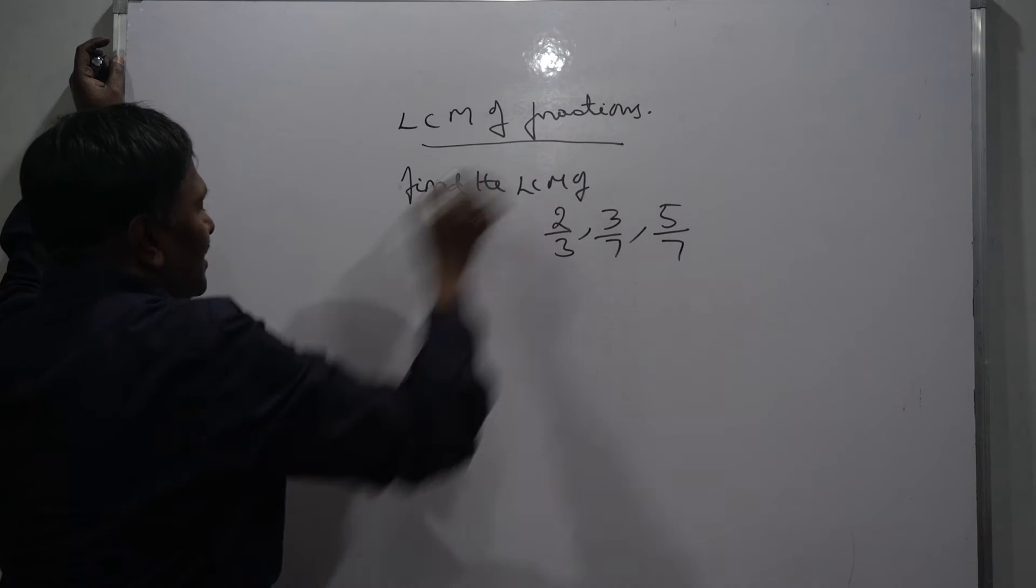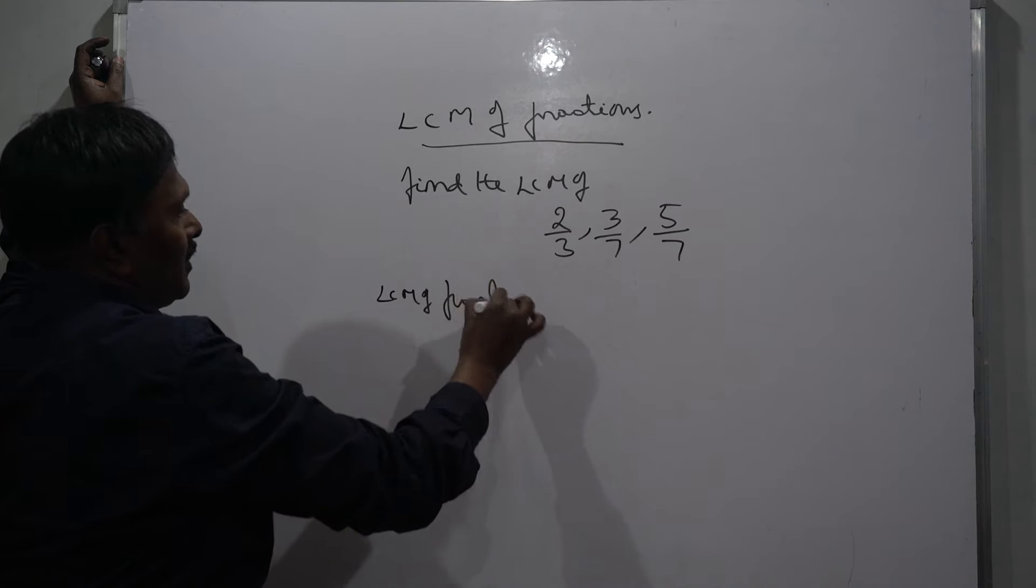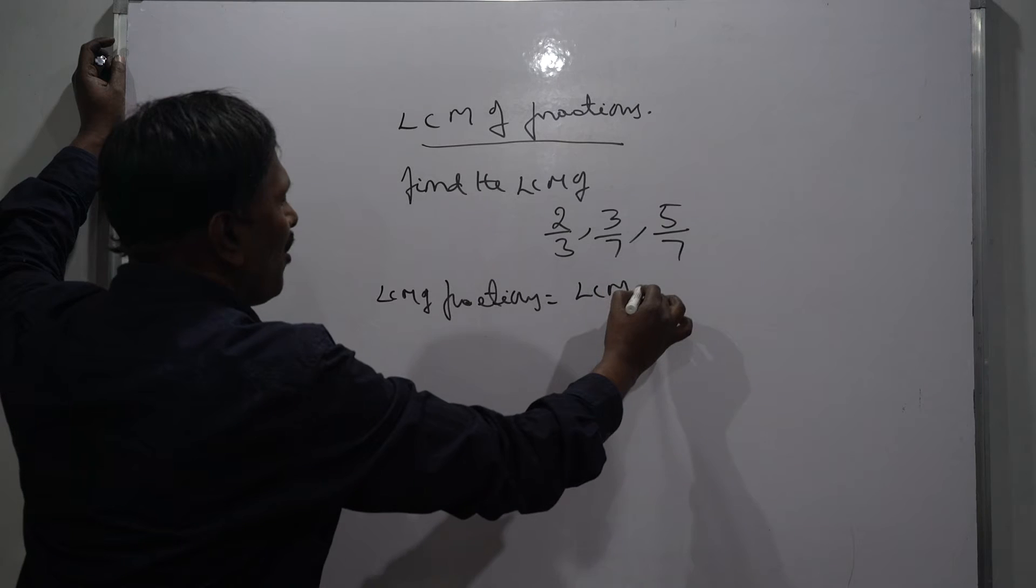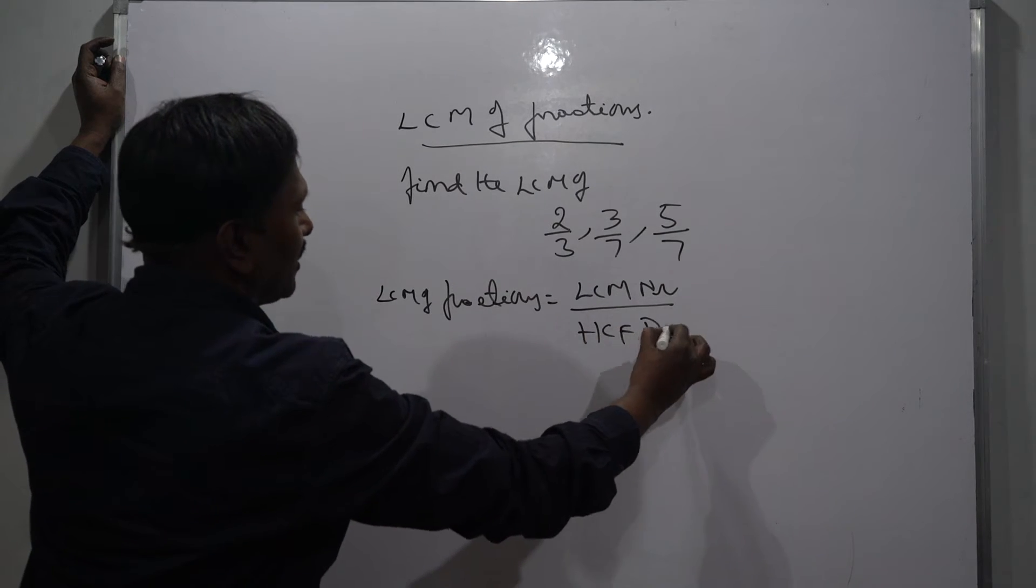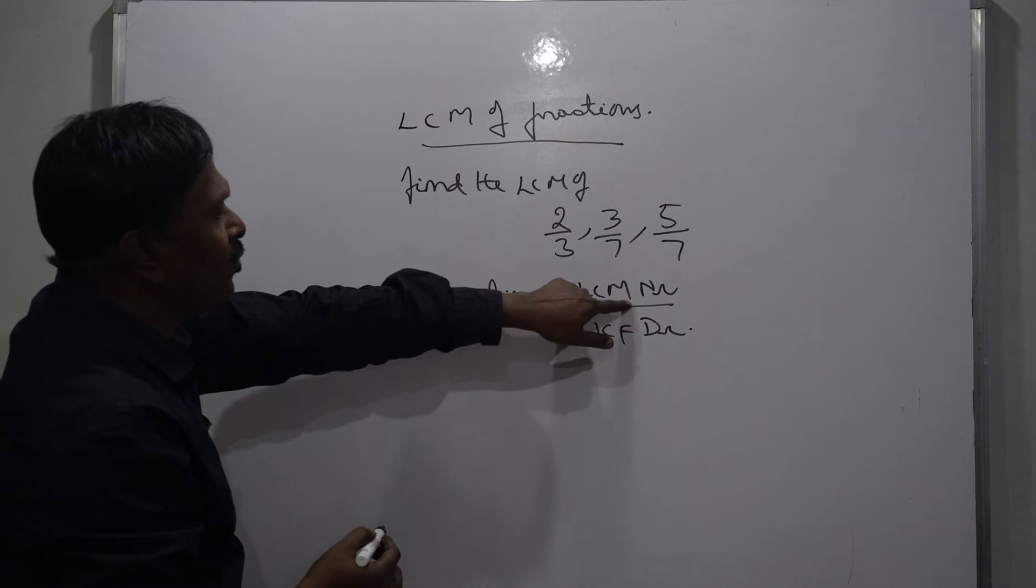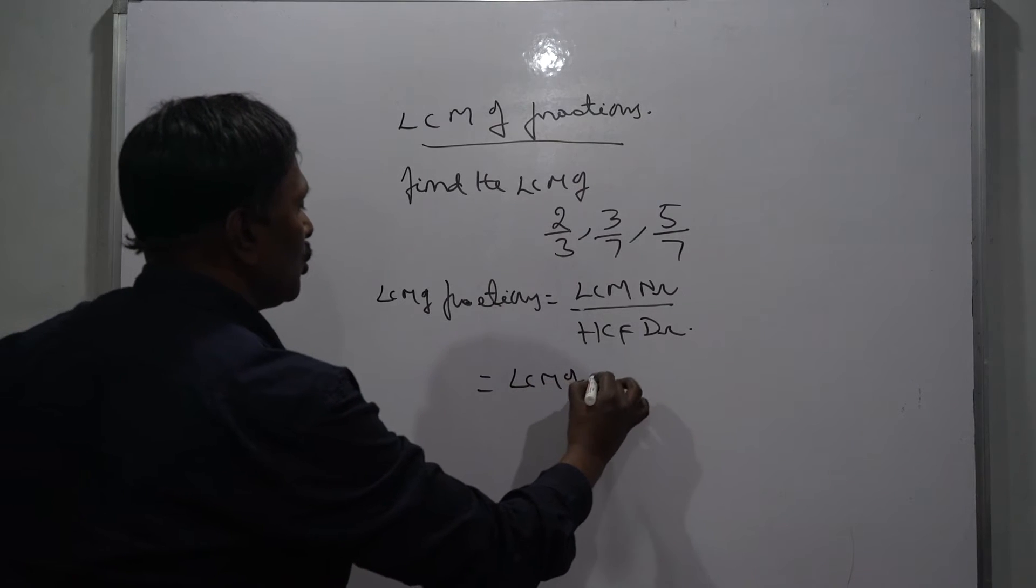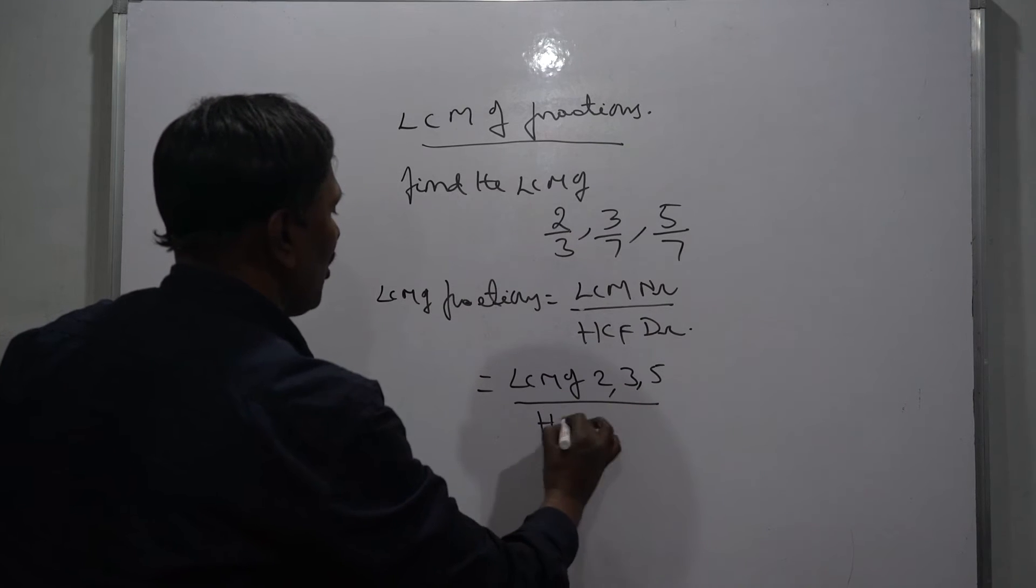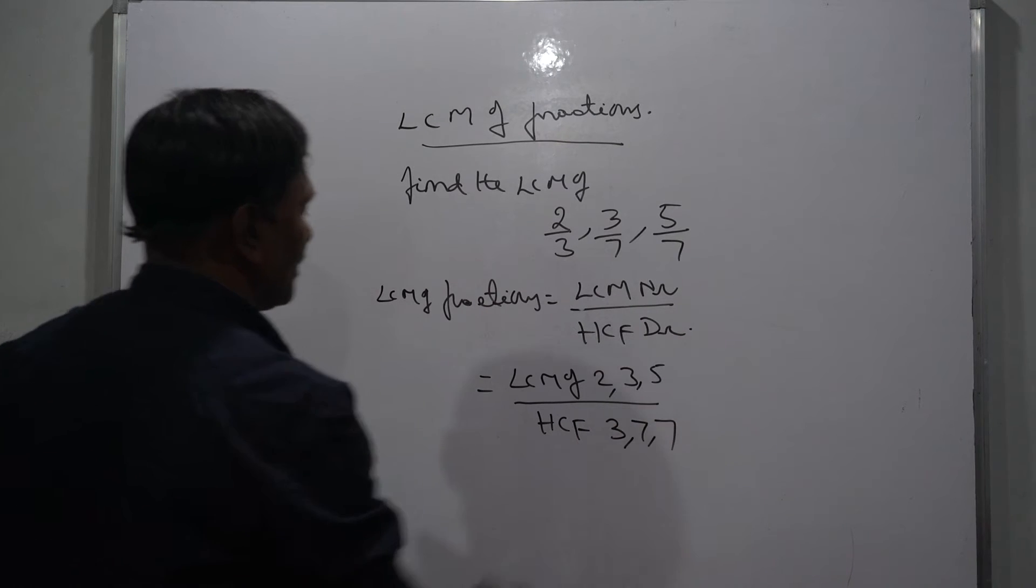See, the LCM of fractions is nothing but LCM of numerators divided by HCF of denominators. So the LCM of fractions equals LCM of numerator by HCF of denominator.